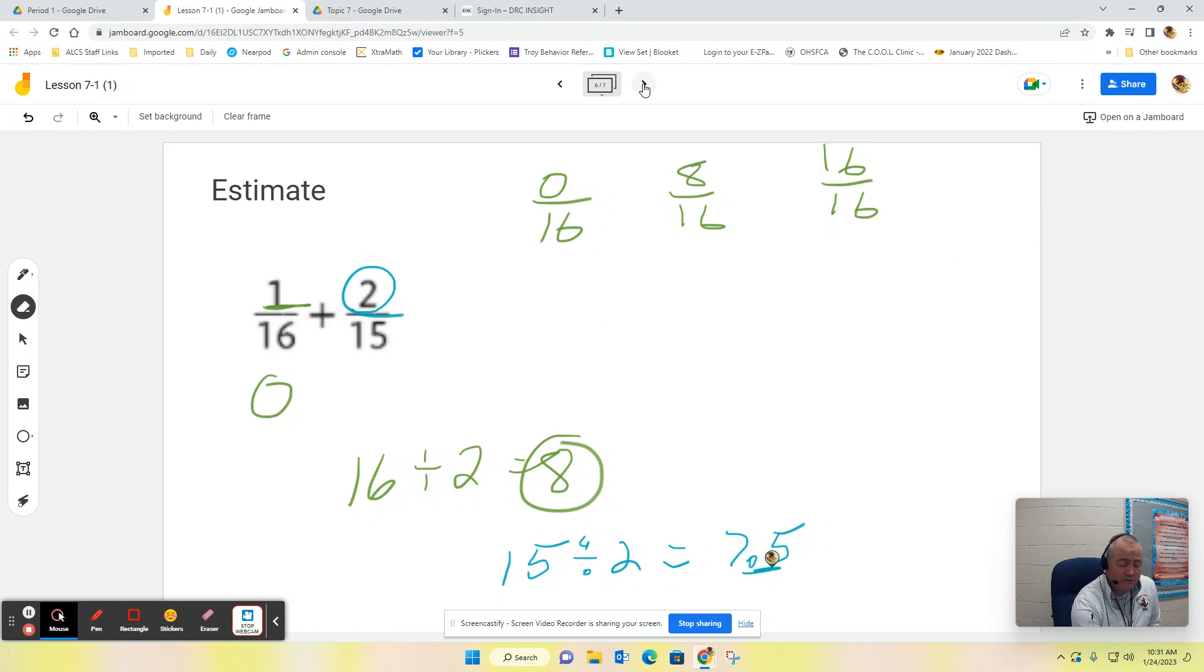Is two closer to 0/15, 7.5/15, or 15/15? Well, two is much closer to zero, so this one also is going to be zero. Hey, here's a question for you. What's zero plus zero? That's zero. Good job.